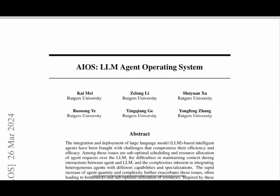Today, we're diving into an exciting paper titled AIOS: LLM Agent Operating System. We'll explore how this revolutionary system integrates intelligent agents with large language models (LLMs) and traditional operating systems to bring us closer to the concept of AGI, or Artificial General Intelligence. Let's unpack what this paper presents and why it matters.